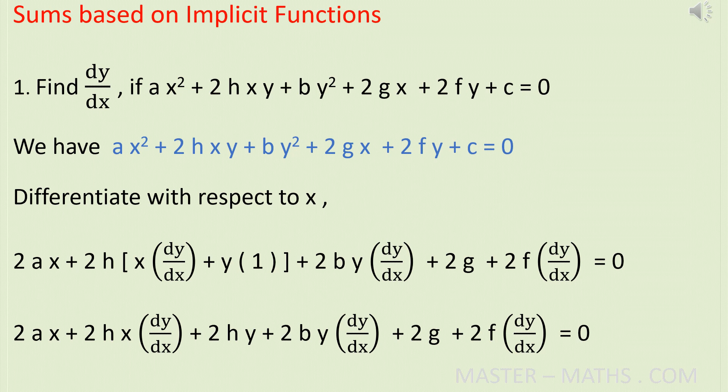Next term: 2fy. On differentiating 2fy, you get 2f into dy by dx. Last term: c. It is a constant, so on differentiating you get 0. On simplifying, you get: 2ax plus 2hx into dy by dx plus 2hy plus 2by into dy by dx plus 2g plus 2f into dy by dx equals 0.